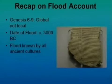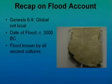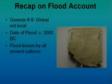Before we get into Genesis chapter 10, just to recap. Firstly, Genesis chapter 6 to 9 speaks about a global flood, not a local one. I remember when I was doing archaeology, my professor told me the flood was the result of ice melting in Lake Van and water pouring into the Mesopotamian civilization. But according to the Bible, it was a global flood. The date of the flood was about 3,000 BC, and the flood was known by all ancient cultures — it was a common record.